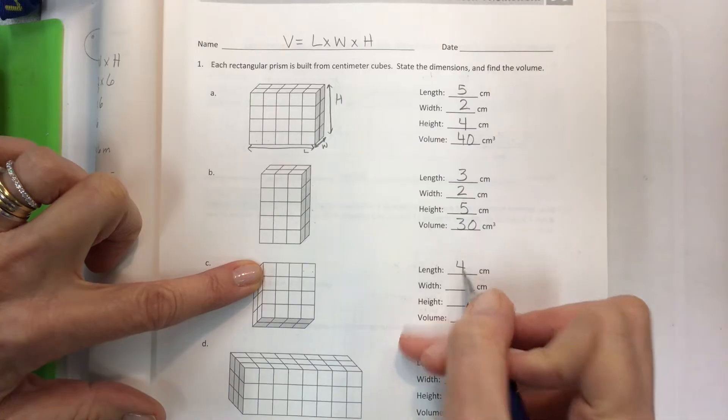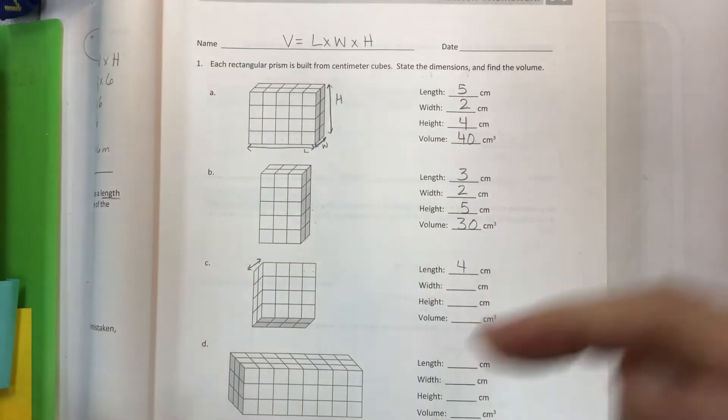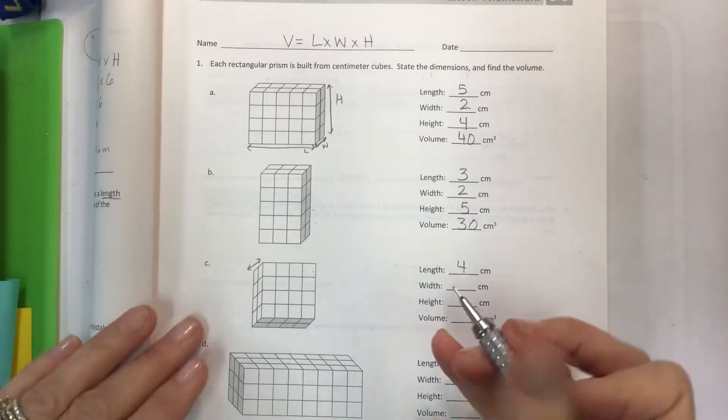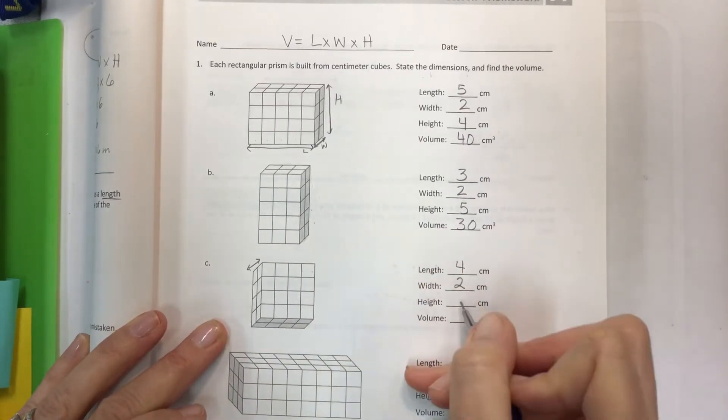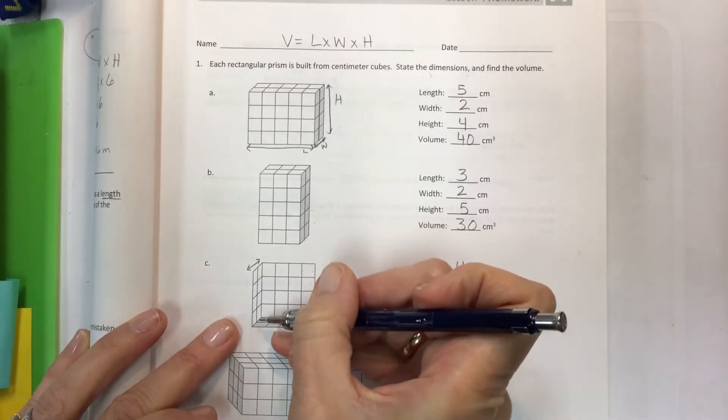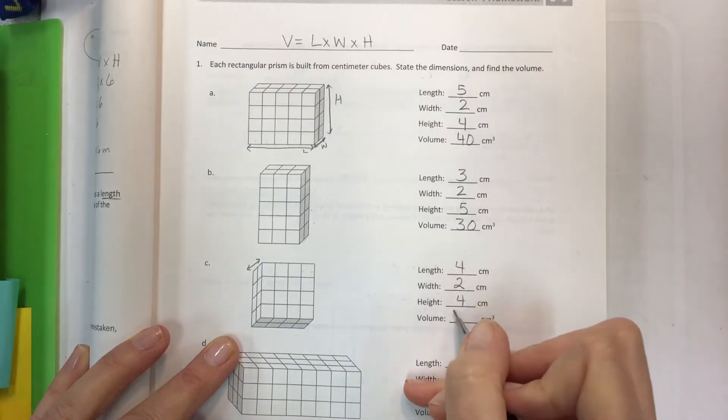So 1 2 3 4, that would be our length going across. Again the width is going to be that going back into the page. This is our 3D look, that's our 2, and the height, still again find something where you can count where it's not going to confuse you. 4 times 2 is 8, 8 times 4 is 32.